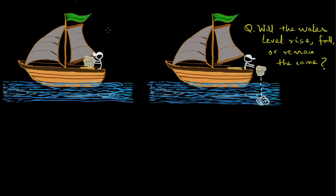Let's think about this and go over the thought process to attack a problem like this. Whenever somebody says the water level goes up or down, you immediately think of volume of liquid displaced. If you drop a solid into a jar of water and it sinks, you see an increase in the water level, because the water gives way to the sinking object. If the object is floating, the increase in water level depends on how much volume of the solid is submerged underwater — that is the volume displaced and accordingly the water level rises.